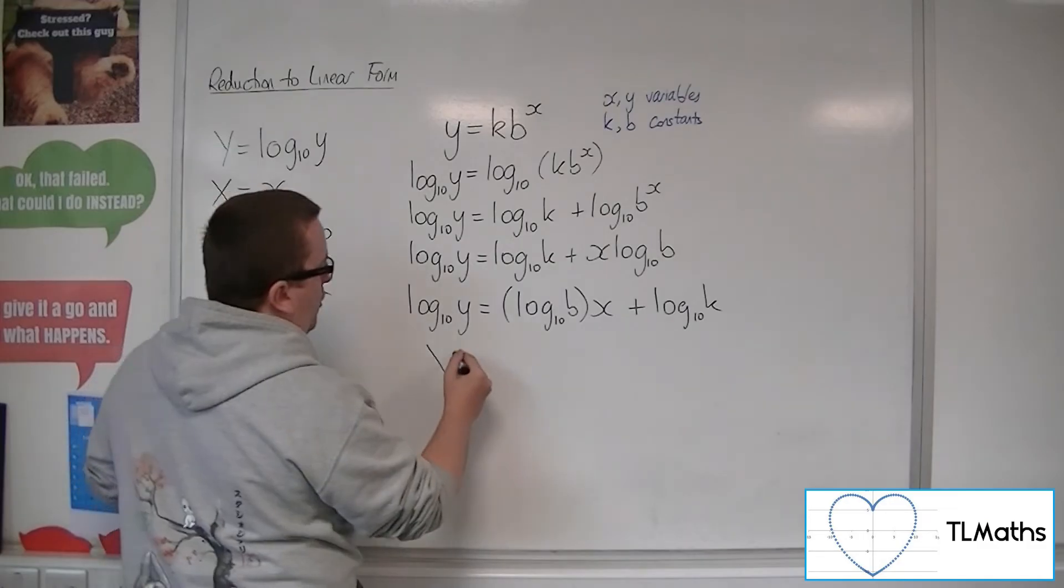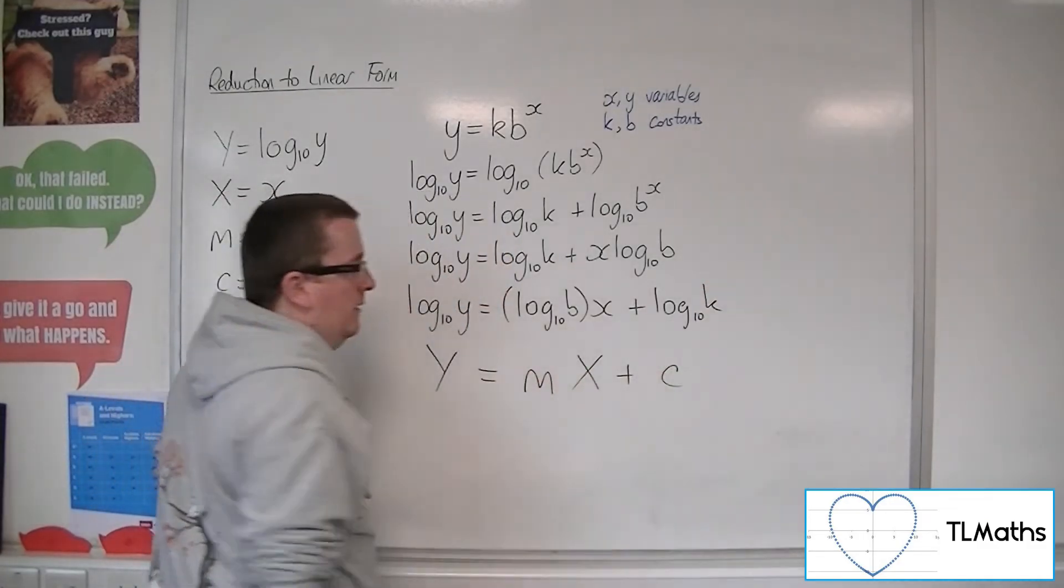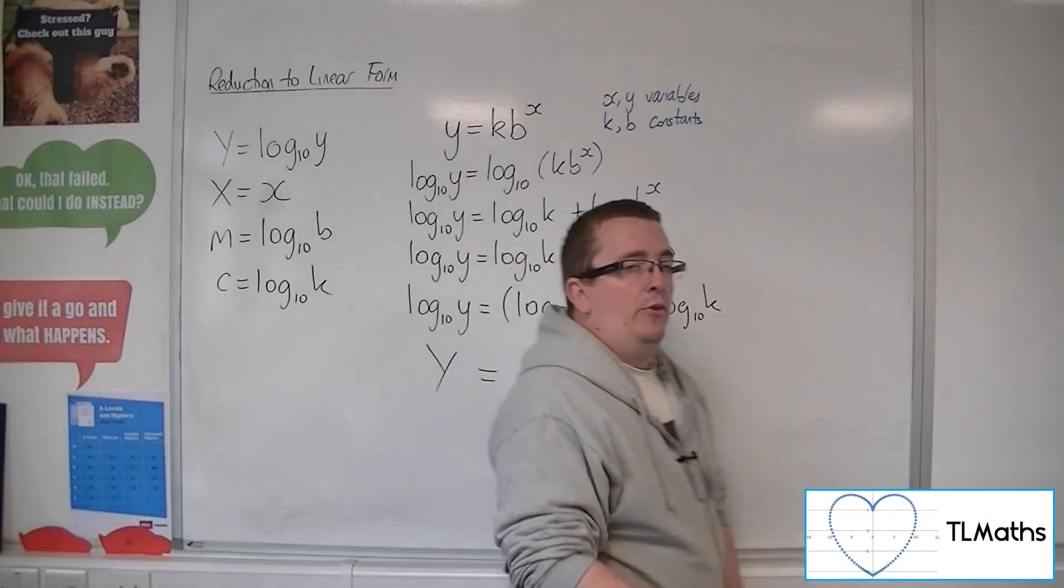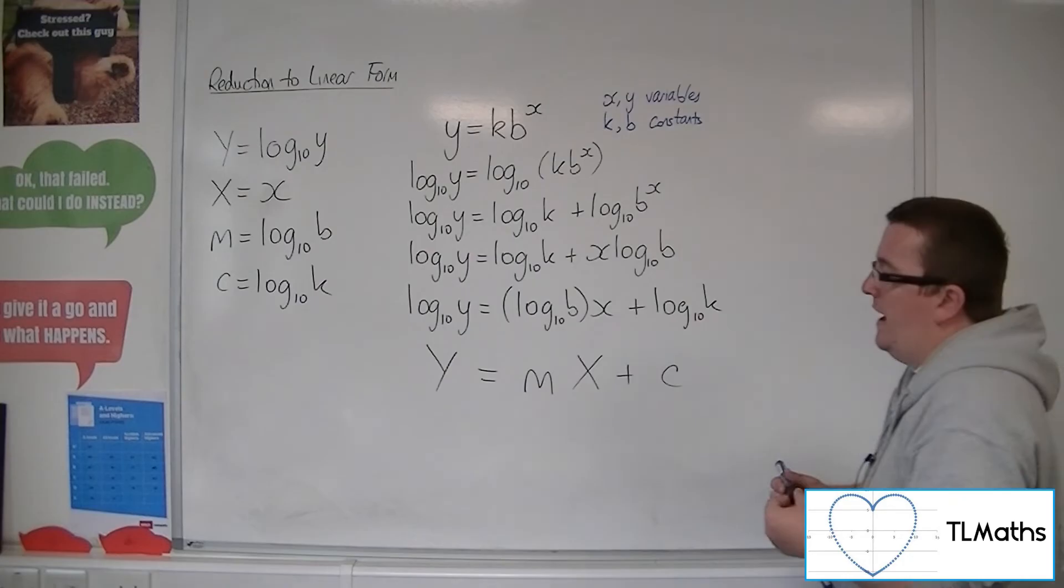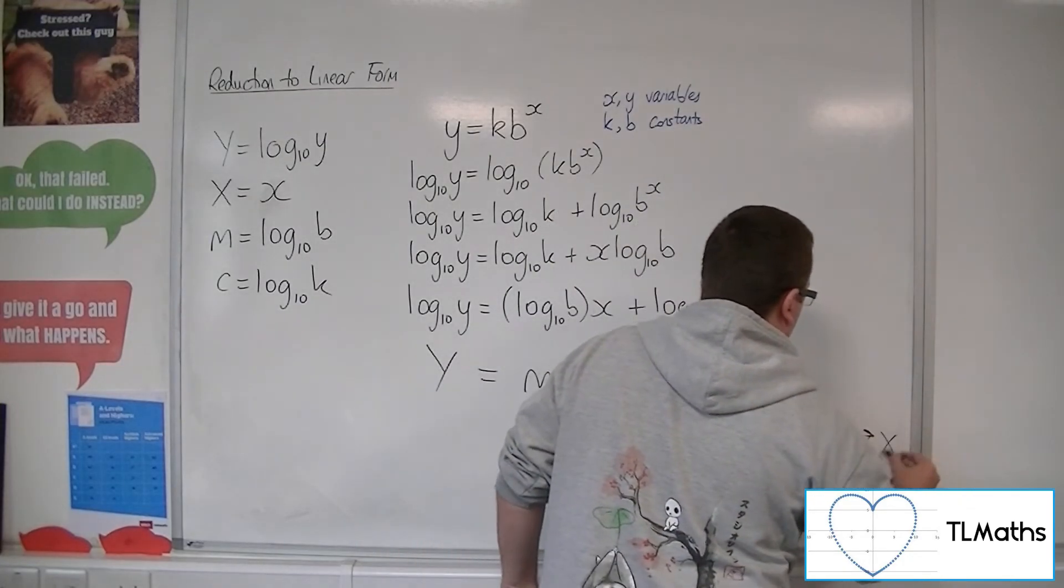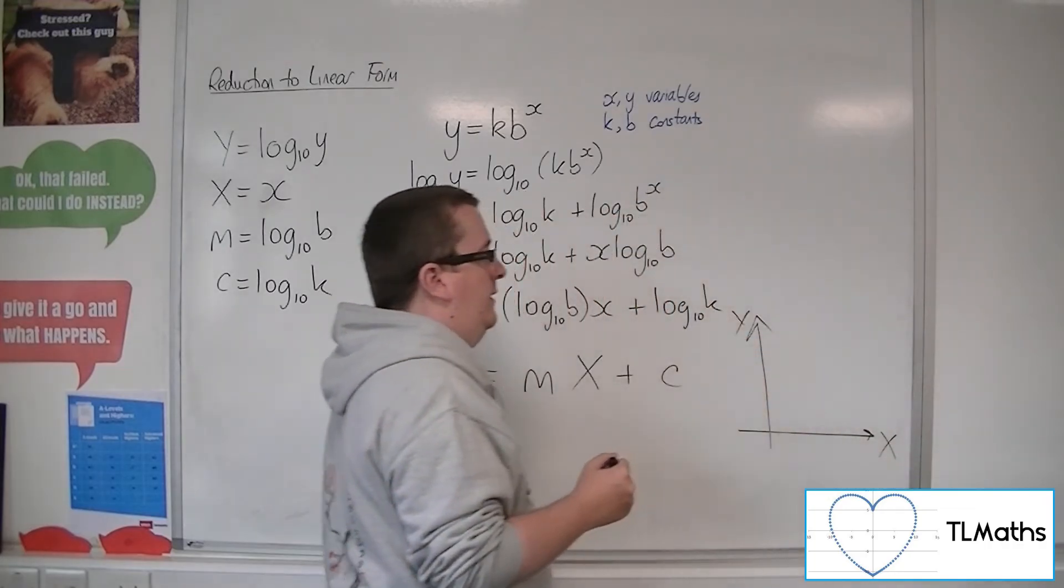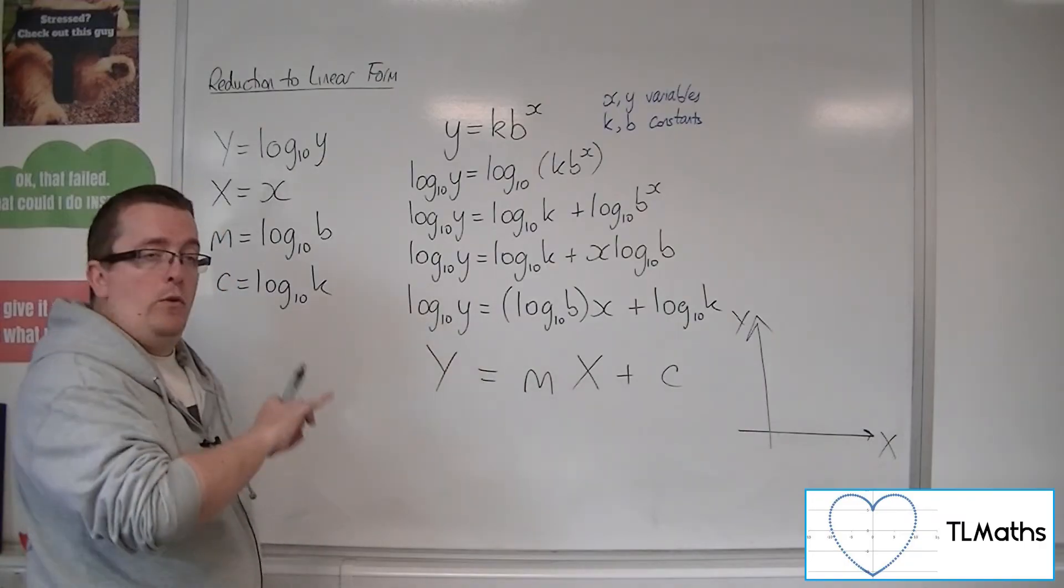So here you've got Y equals mX plus c. So this represents another straight line. So then what you can then do is once you've plotted your data, X against log 10y,